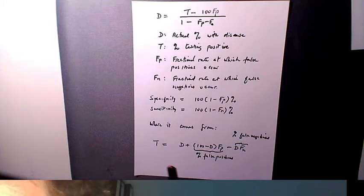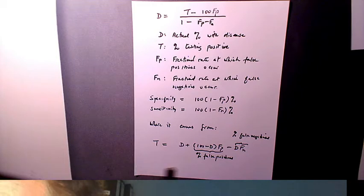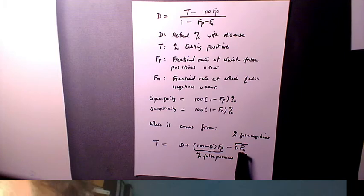Where it actually comes from is from saying, the number of people testing positive is equal to the number of people who actually have the disease, plus the number of people who show a false positive, minus the number of people who show a false negative.